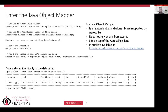So we designed the Java Object Mapper. It's designed to map POJOs onto Aerospike and back. It's very lightweight — it doesn't rely on other frameworks. If you're not using the Spring framework, it doesn't matter. We have another talk at Summit on how to use Spring Data with Aerospike, which works really well if you're using Spring. But if you want something lightweight that sits on top of the Aerospike client, the Java Object Mapper is a good alternative. Your code still has access to the underlying client if you want to do something the mapper doesn't support.